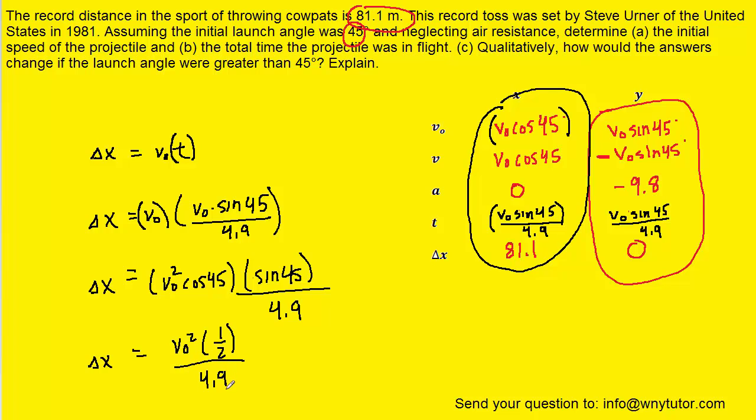We're trying to solve in part a for V0. To do that, multiply both sides by 4.9 so it cancels on the right side. Then multiply both sides by 2 because one half times 2 is 1. Finally, take the square root of both sides. We've now isolated V0, the initial speed of the projectile.